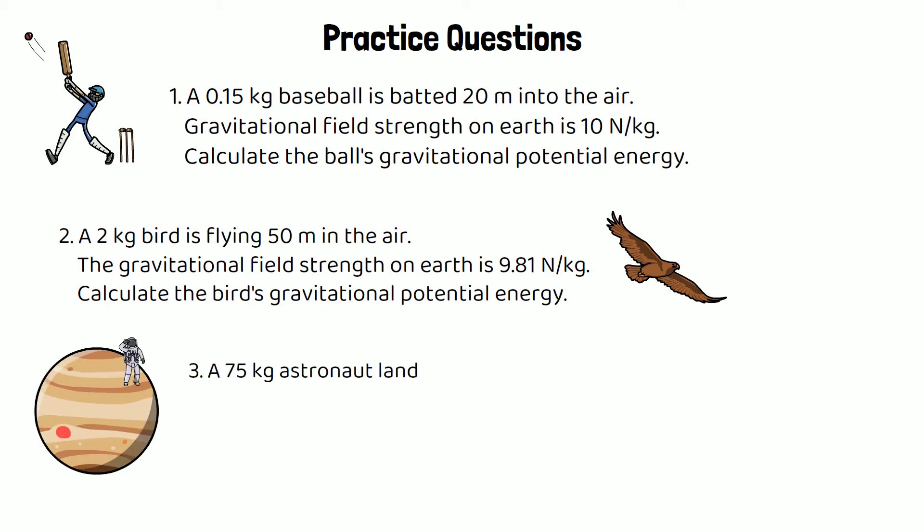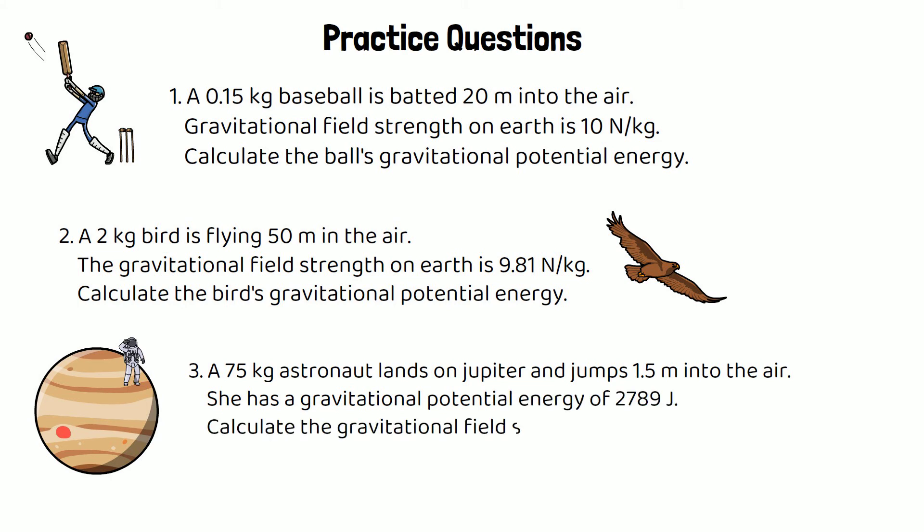And for the final question, a 75 kilogram astronaut lands on Jupiter and jumps 1.5 meters into the air. She has a gravitational potential energy of 2,789 joules. Calculate the gravitational field strength on Jupiter. So for this question, you need to rearrange the equation to make gravitational field strength the subject. Pause the video and have a go at these questions.